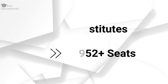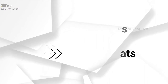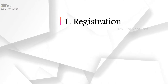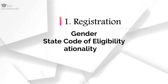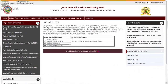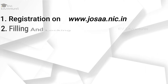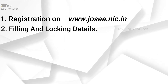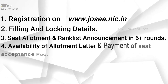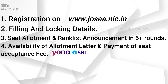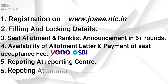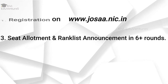Now let's go to the counselling process. The counselling process begins with registration, where aspirants fill general details like gender, state code of eligibility, nationality, and contact details. The overall counselling procedure for JOSA is: Step 1, Registration; Step 2, Filling and locking of choices; Step 3, Seat allotment and rank list announcement; Step 4, Availability of allotment letter and payment of seat acceptance fee; Step 5, Reporting at the reporting center; Step 6, Reporting at the allotted institutes.